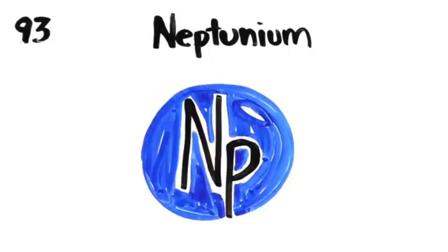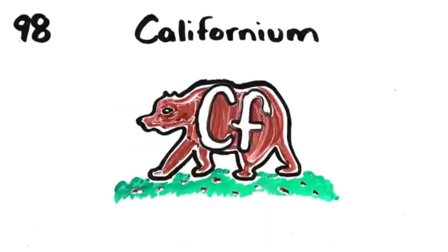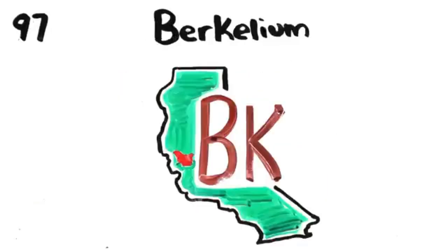Actinium, thorium, protactinium, uranium, neptunium, plutonium, americium, curium, berkelium, californium, einsteinium, fermium, mendelevium, nobelium, and lawrencium.